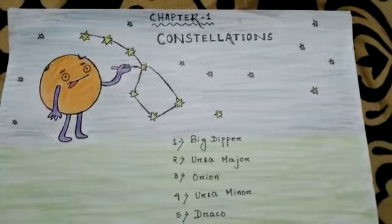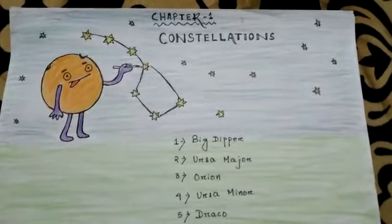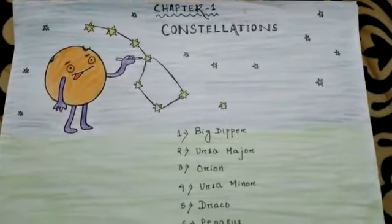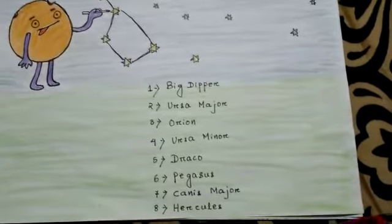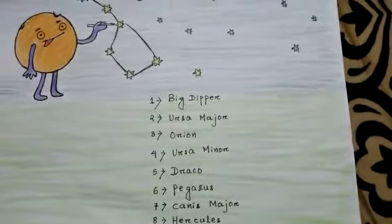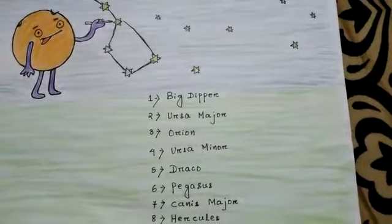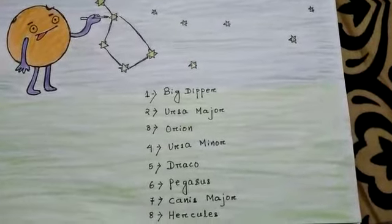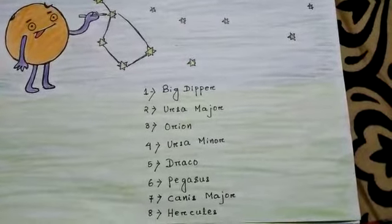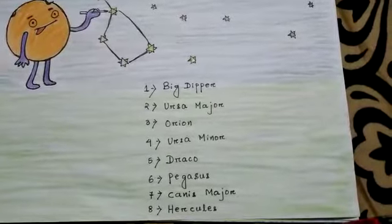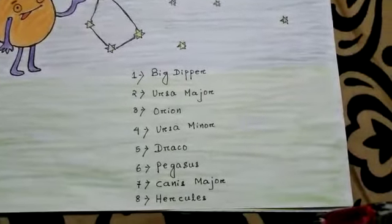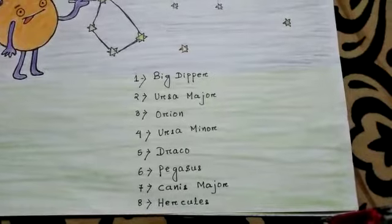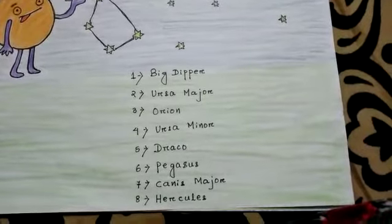Now let us do our question answers. In the book you can see the question: look at the picture and name the constellation. Number one is given — the Plough — so the answer will be Big Dipper. Number two is the Great Bear, and the answer will be Ursa Major.